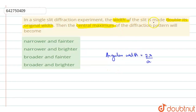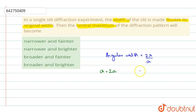Here, 'a' is the width of the slit. If the value of 'a' is doubled — the width of the slit is made double its original width, so 'a' becomes '2a'. When the value of 'a' is doubled, the angular width decreases because angular width is inversely proportional to the width of the slit.